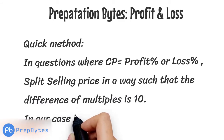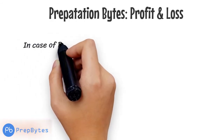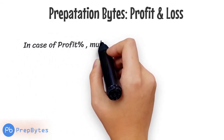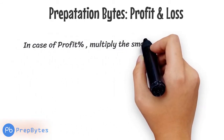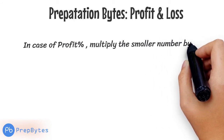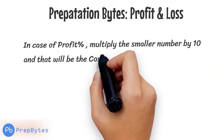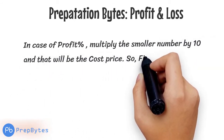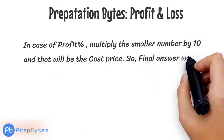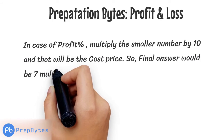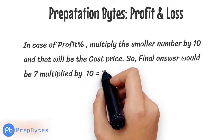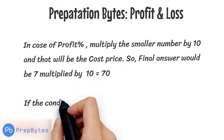In our case the splits are 17 and 7. In the case of profit percent, multiply the smaller number by 10 — that will be the cost price. So the final answer is 7 multiplied by 10, which equals 70.